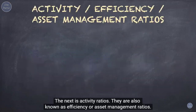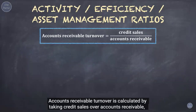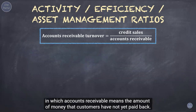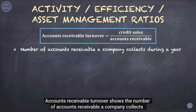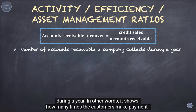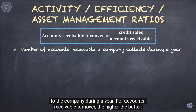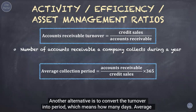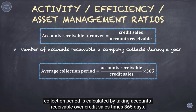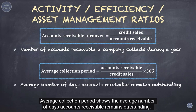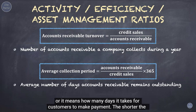The next is activity ratios, also known as efficiency or asset management ratios. Accounts receivable turnover is calculated by taking credit sales over accounts receivable, where accounts receivable means the amount of money that customers have not yet paid back. This ratio shows the number of times a company collects its accounts receivable during a year — in other words, how many times customers make payment to the company. For accounts receivable turnover, the higher the better. An alternative is the average collection period, calculated by taking accounts receivable over credit sales times 365 days, showing the average number of days it takes for customers to make payment.